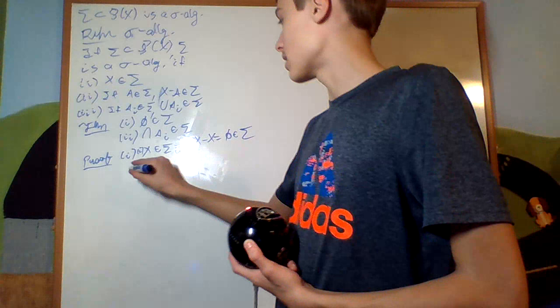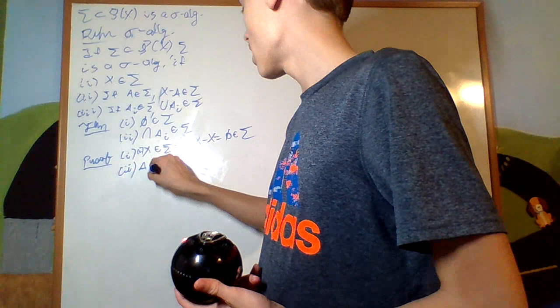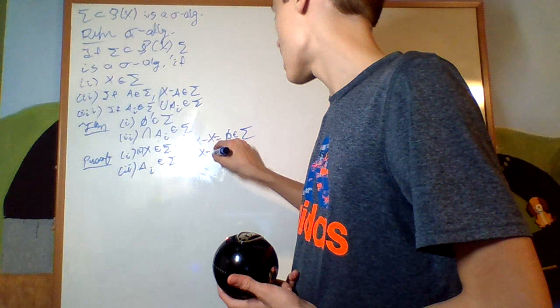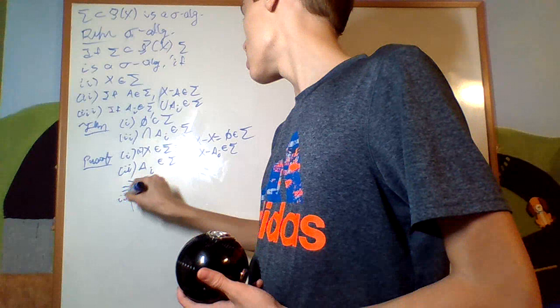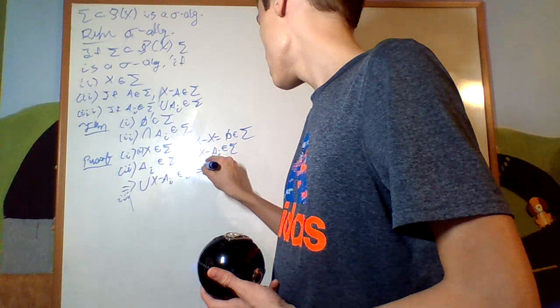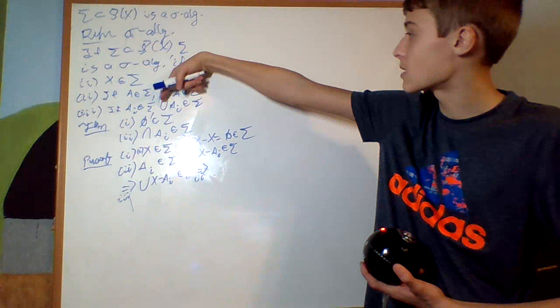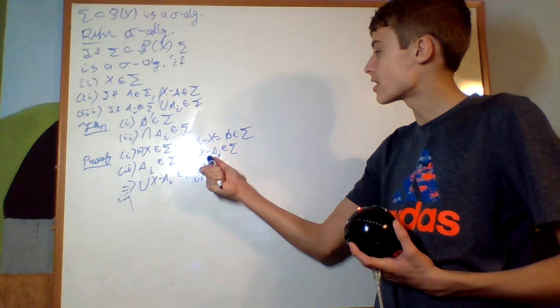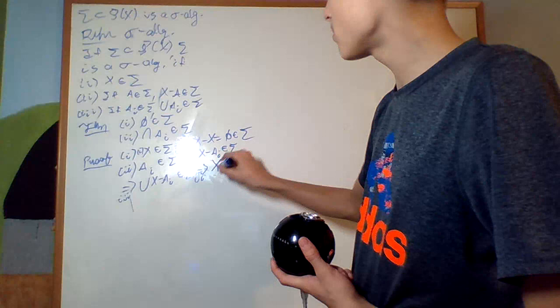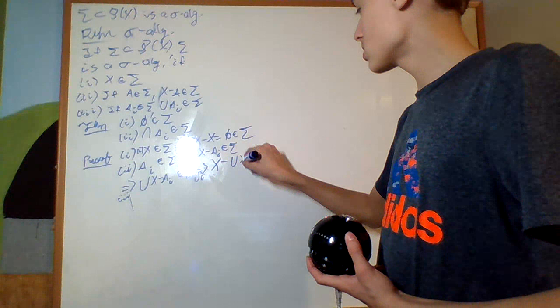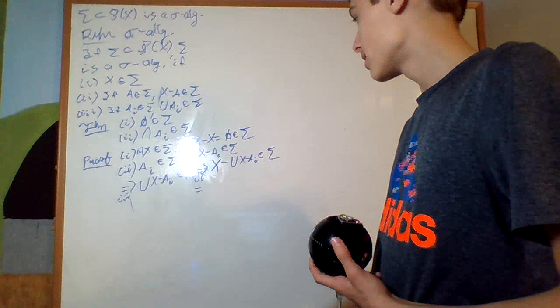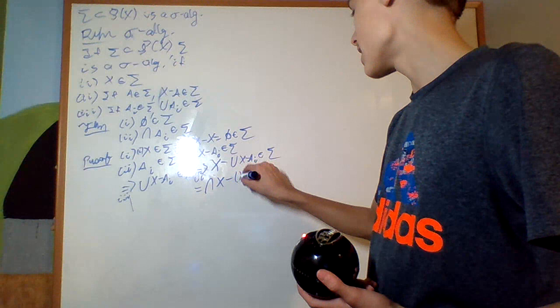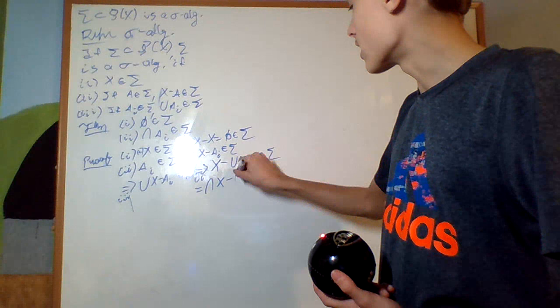Second theorem: is sigma closed under countable intersections? That's also true. If A_i is an element of sigma, then by condition two, X minus A_i is an element of sigma. Then by condition three, the union of (X minus A_i) is an element of sigma. Then by condition two again, the complement of that union is also in sigma. If you apply De Morgan's law, you can bring X inside and get X minus (X minus A_i), which gives you A_i. So the intersection of the A_i's is an element of sigma.